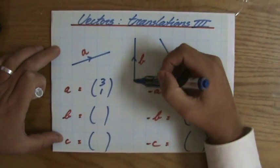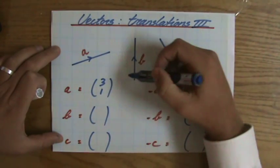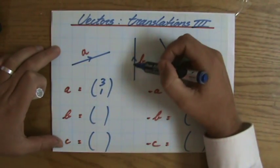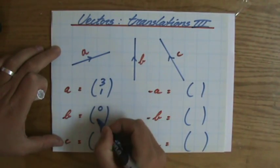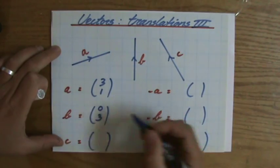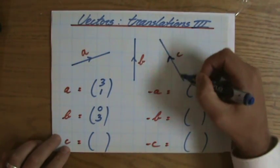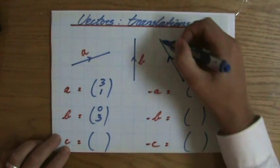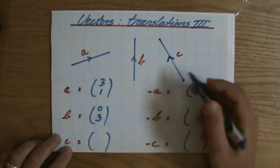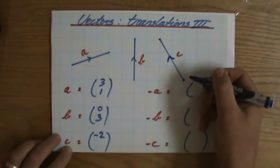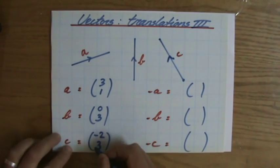For b, it has no horizontal translation, it only goes one, two, three up, so it's going to be (0, 3). What about c? That's the direction, so from there to there it's going to be minus two — because I'm going to the left — and then three up.